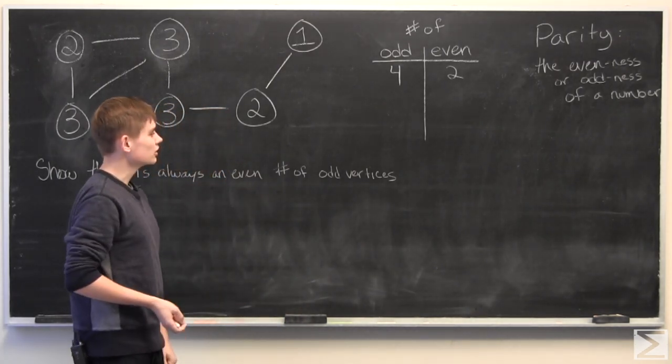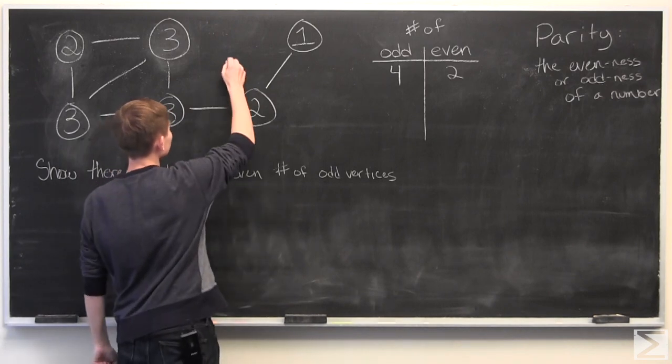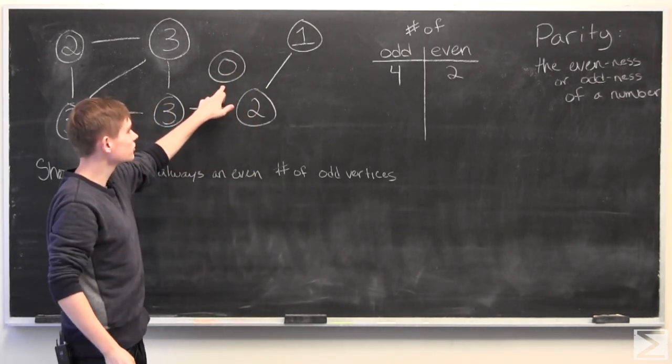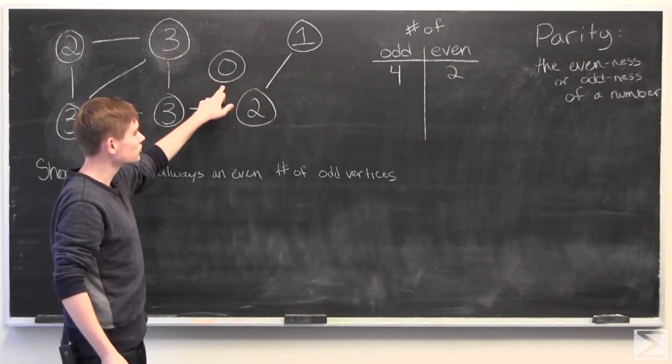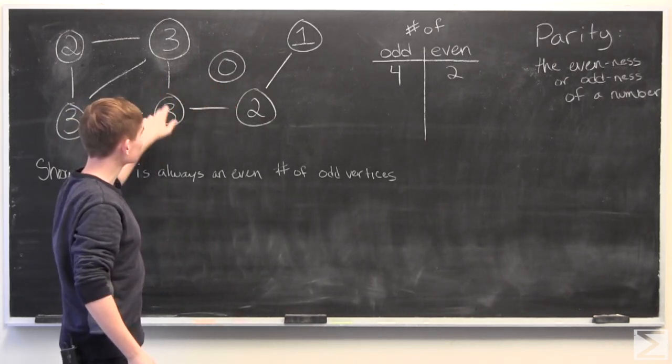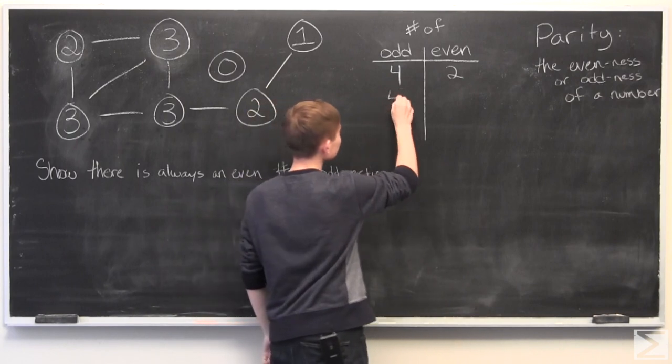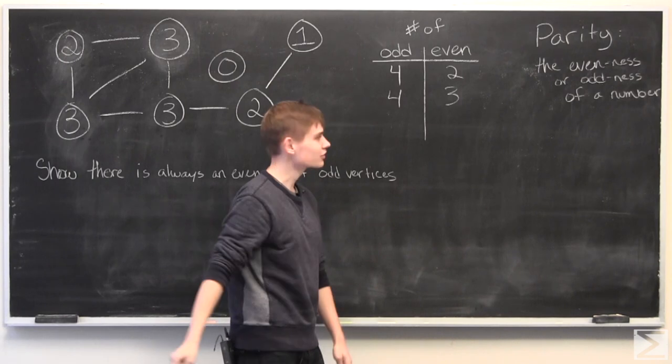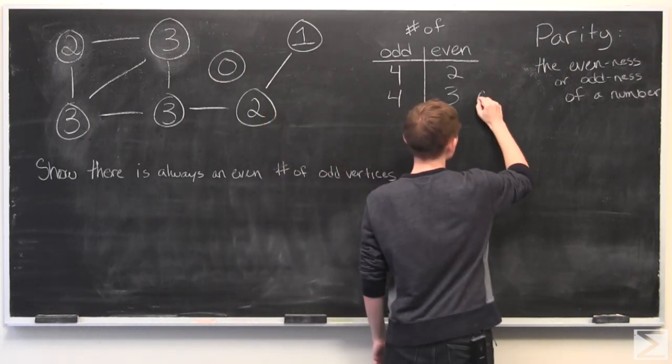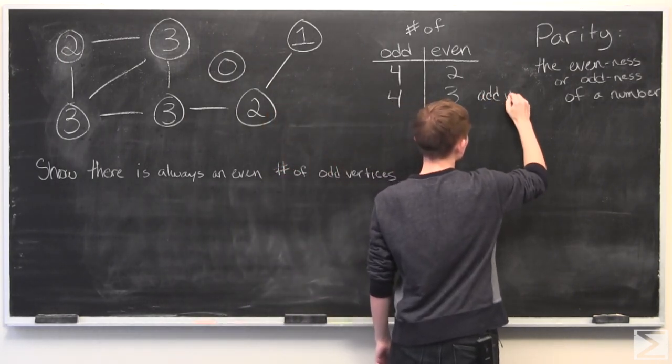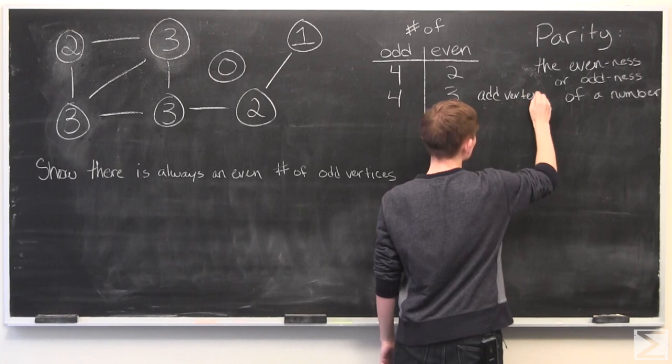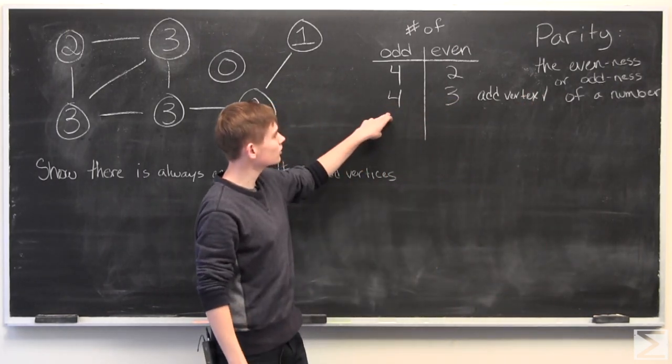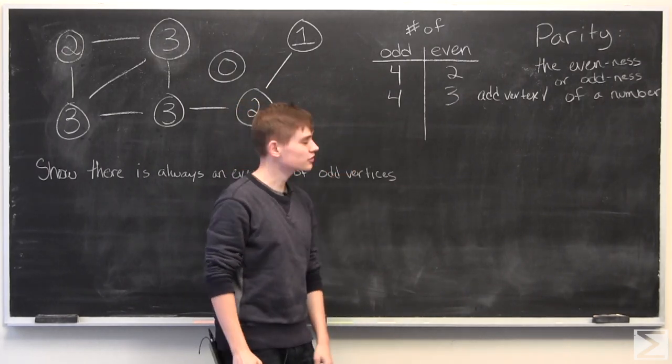The next thing we can do is add a vertex. So if we add a vertex, this will be zero because there's no edges connecting to it. Zero is even, so if we count them up again, we'll still have four odd vertices and we'll just have an extra even vertex. So when we add a vertex, it conserves the parity of the number of odd vertices.